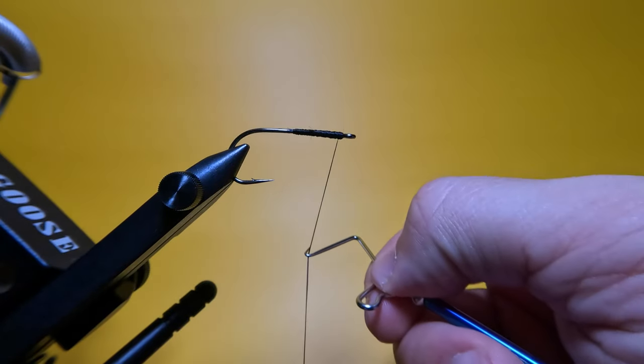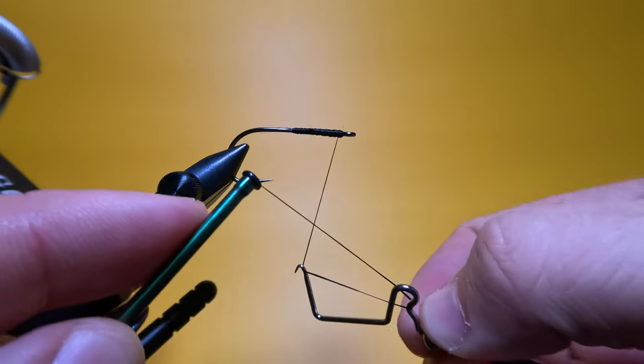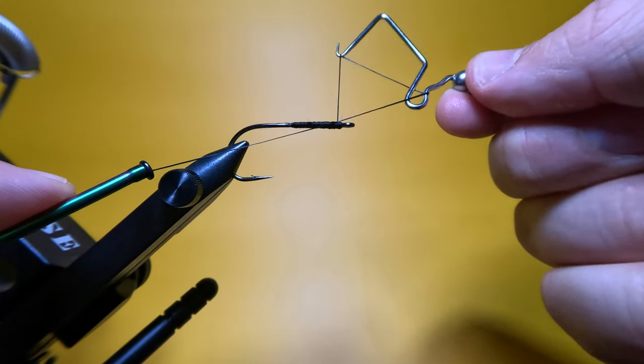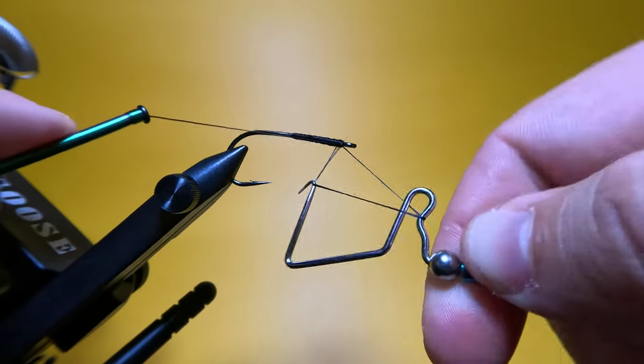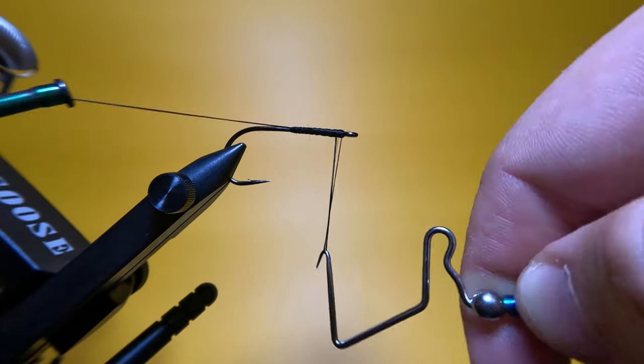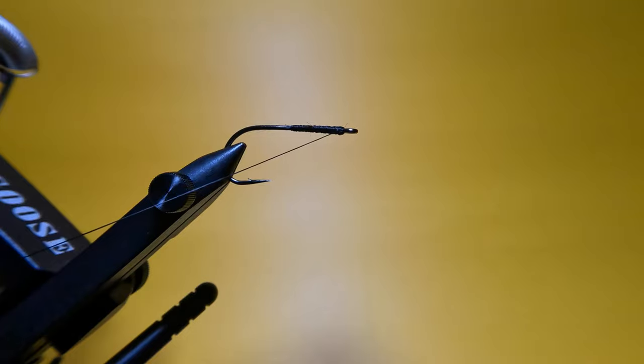So to recap: hook the thread, catch the lower bend, upside down figure 4, flip it, lower the thread, perform your wraps, release from the bend, close the loop, remove the hook.